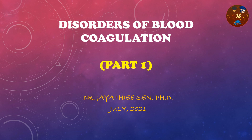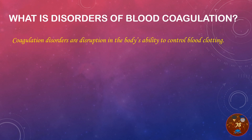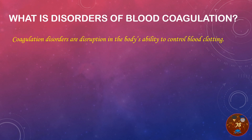Today's topic of discussion is a series I am starting on disorders of blood coagulation. In this series, we will discuss different types of disorders associated with the blood coagulation process. This is Part 1. Coagulation disorders are disruptions in the body's ability to control blood clotting — when normal blood clotting is not possible, there is a problem of continuous bleeding from wounds or cuts, which may be internal or external.